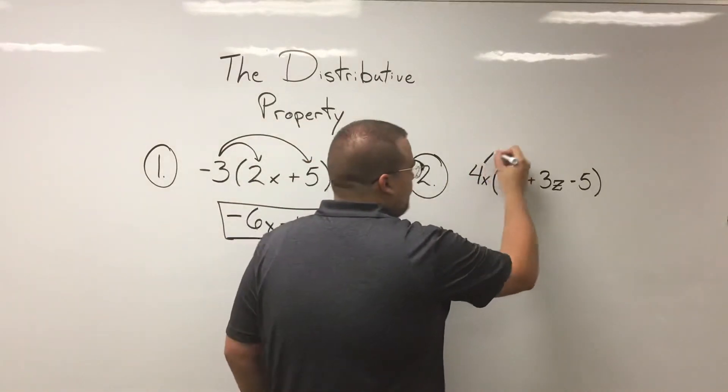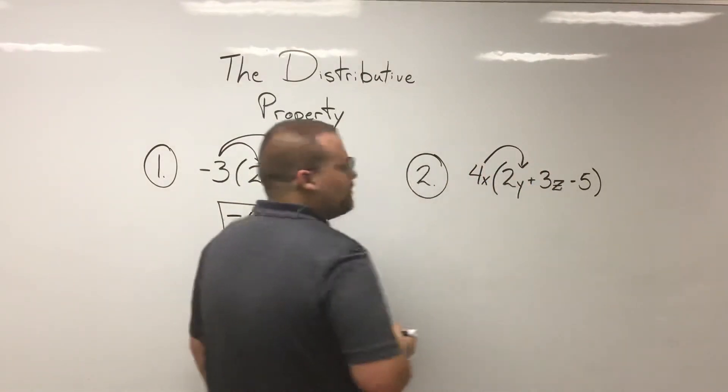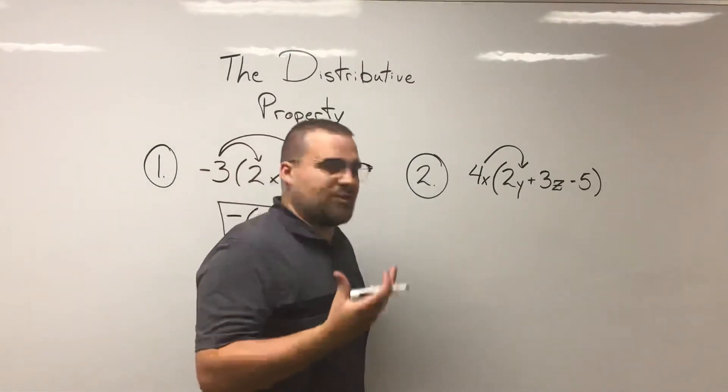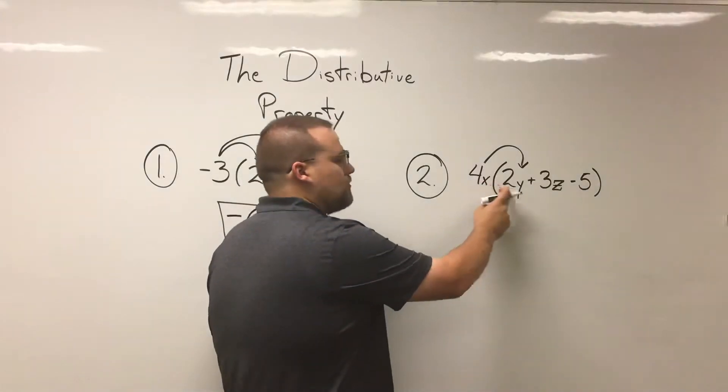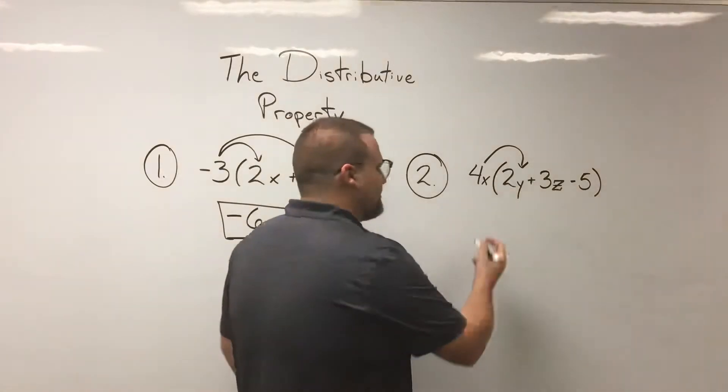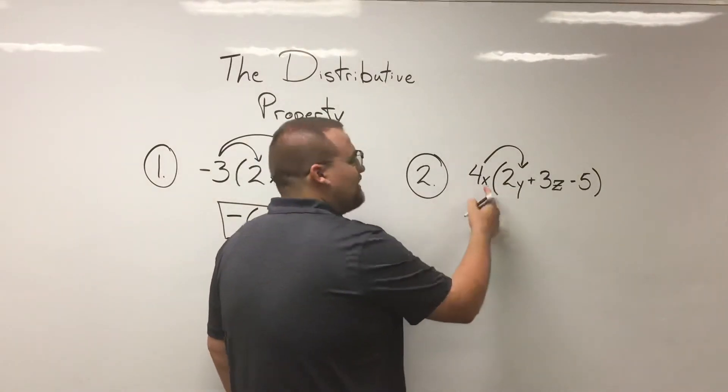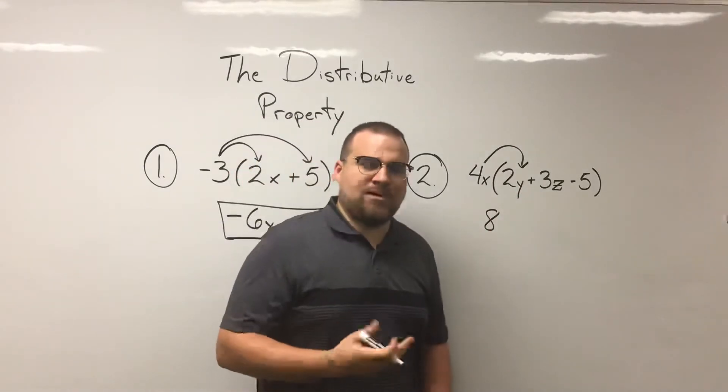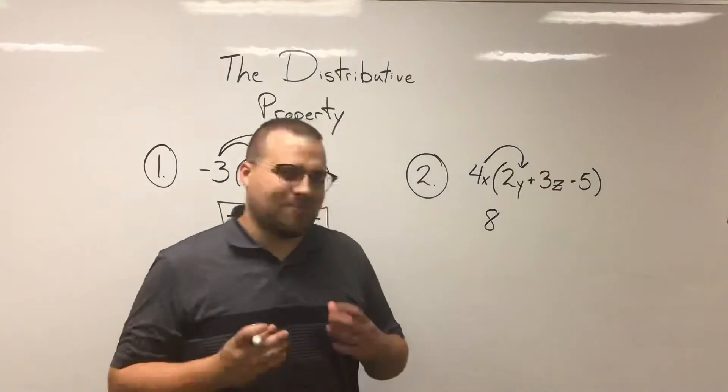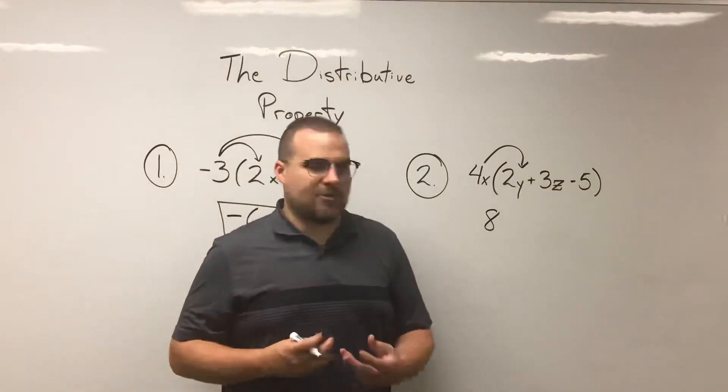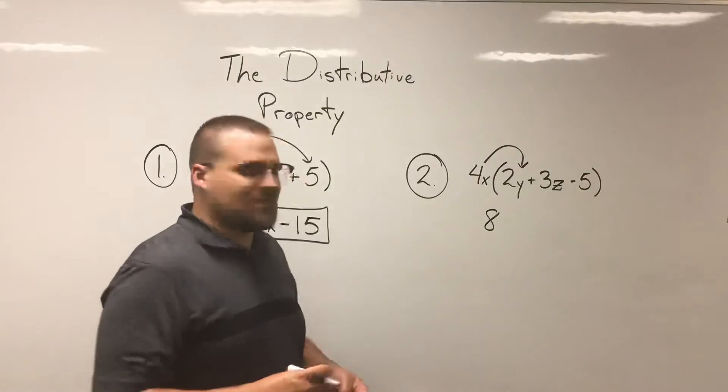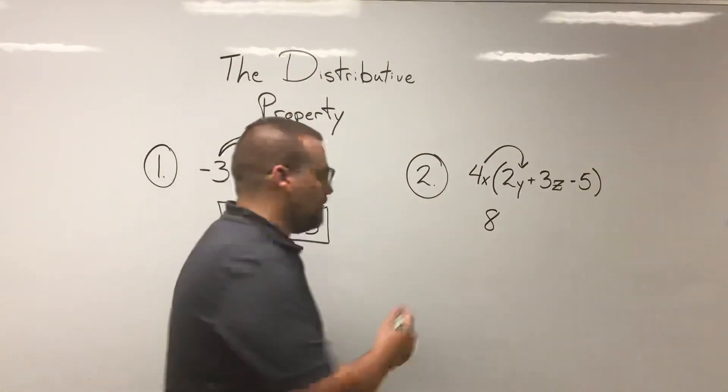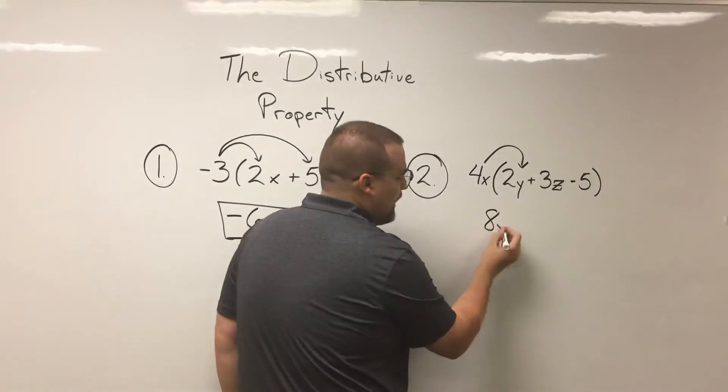So let's go ahead and take a look at this. The four is going to first distribute to the first term, 2y. So whenever we're multiplying two numbers, both variables, the whole numbers are going to multiply. Four times two, that'll give us eight. And then the variables are also going to multiply. We are just going to see these variables be written together with the eight: x, y.